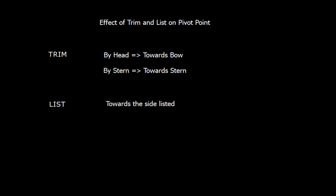Let us discuss the effect of trim and list on pivot point. In case of trim towards head, the pivot point will shift towards bow. And if it is trimmed by stern, the pivot point will shift towards stern. Obviously, it has to move towards the trimmed side. Similarly, if the vessel is listed, then pivot point shifts towards the listed side.